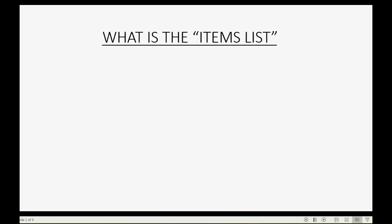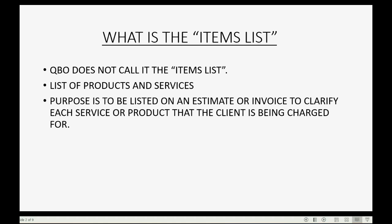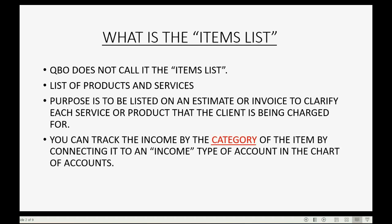What is the Items List? QuickBooks Online does not actually call it the Items List. It actually calls it the list of products and services that you offer to your clients. The purpose of this list is to be able to list these items on an estimate or an invoice to clarify each service or product that your client is being charged for. You can track the income by the category of the item by connecting it to an income type of account in the chart of accounts.